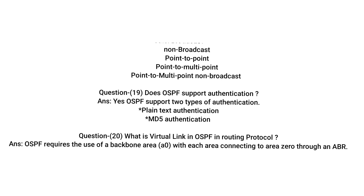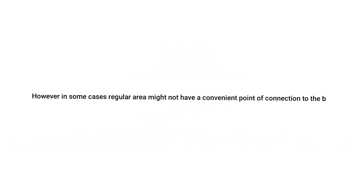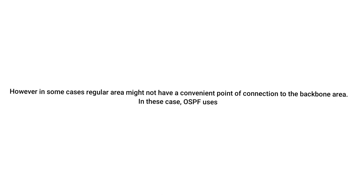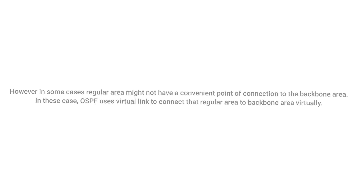Question: What is a virtual link in OSPF? Answer: OSPF requires a backbone area with each area connecting to area 0 through an ABR. However, in some cases a regular area might not have a convenient point of connection to the backbone area. In this case, OSPF uses a virtual link to connect that regular area to the backbone area virtually.